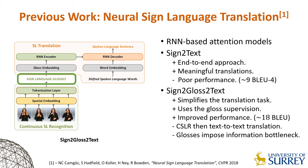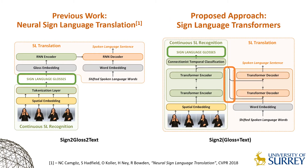One can consider the second gloss-to-text step as trying to translate from a source language without having access to its grammar. To utilize gloss supervision without limiting the learned representations, we propose Sign Language Transformers.